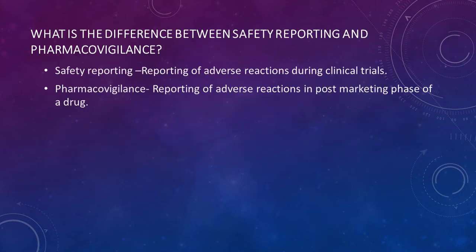What is the difference between safety reporting and pharmacovigilance? Safety reporting is the reporting of adverse reactions during clinical trials or in the pre-marketing phase of a drug, while pharmacovigilance is the reporting of adverse reactions in the post-marketing phase of a drug.